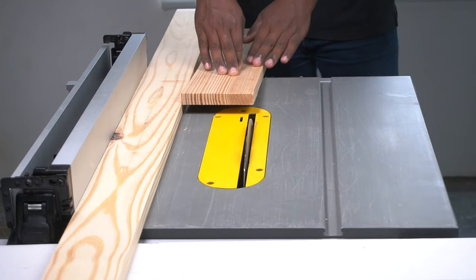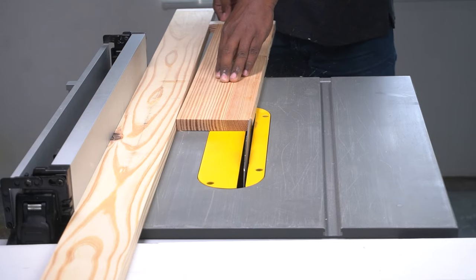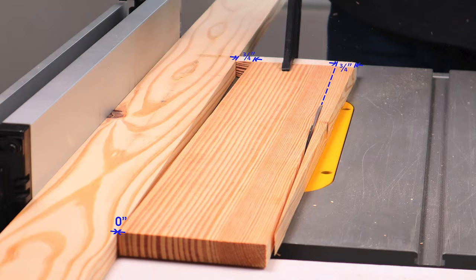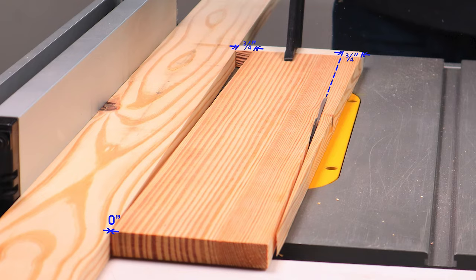Plug in the table saw and turn it on. Let it reach full speed. Slowly slide the wood forward, keeping the workpiece down and also pushing against the spacer board. As the top of the wood is touching the spacer and the bottom of the wood has a scrap wood piece attached to it, the finished cut will be a tapered wood with a taper of exactly three-fourths of an inch.